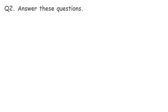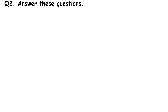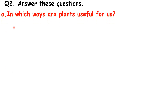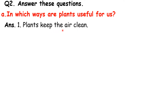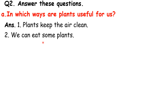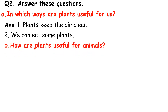Now let's start Question Number Two: Answer these questions. Everyone read after me: In which ways are plants useful for us? The answer is: plants keep the air clean, we can eat some plants, plants have a pleasant smell, and plants give us fruits and vegetables.